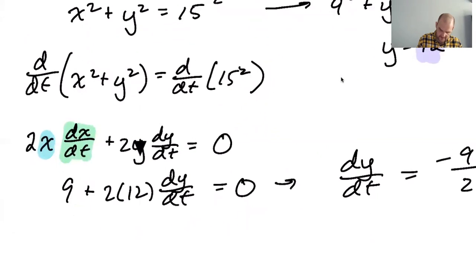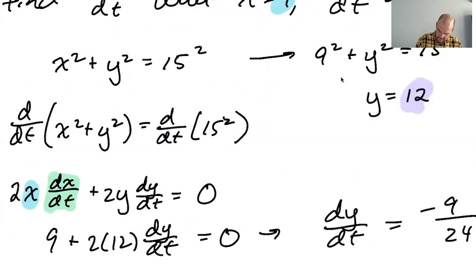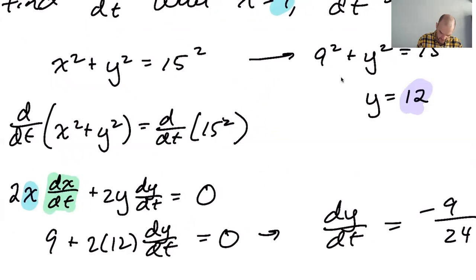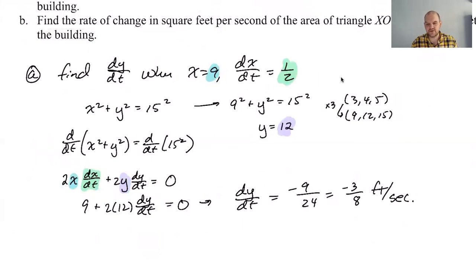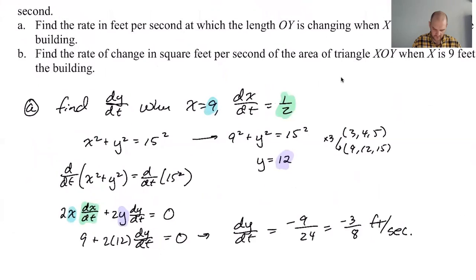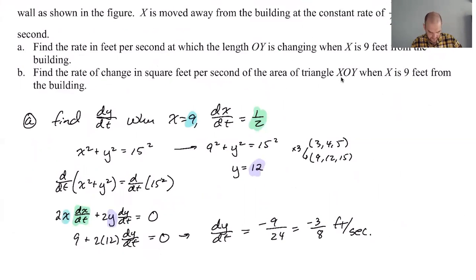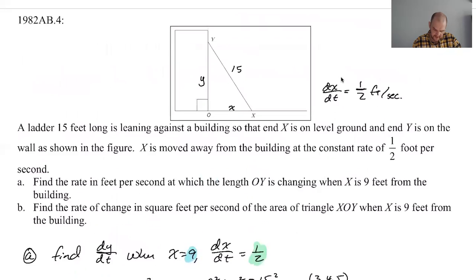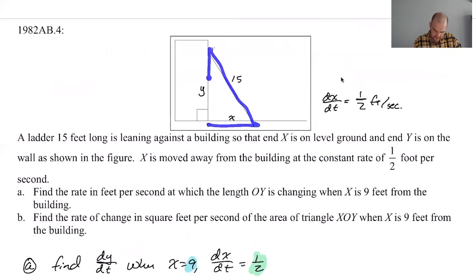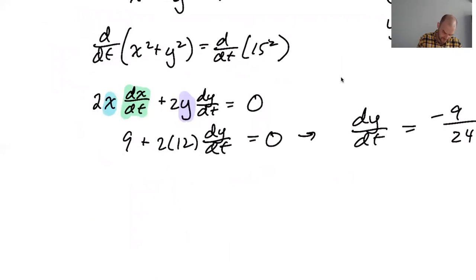The only thing I don't like here is it autocorrect somehow turned my highlighting in purple into a triangle. Find the rate of change in square feet per second of the area of triangle XOY when X is 9. So XOY is there. So 1/2 base times height. So 1/2 X times Y is the area.